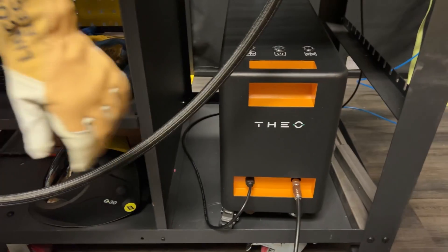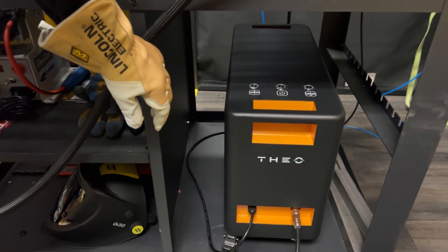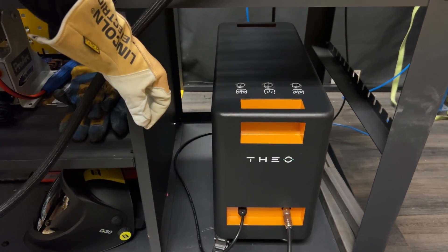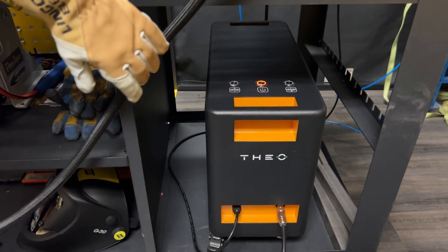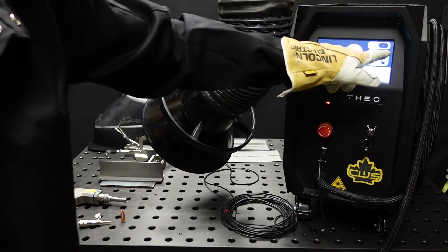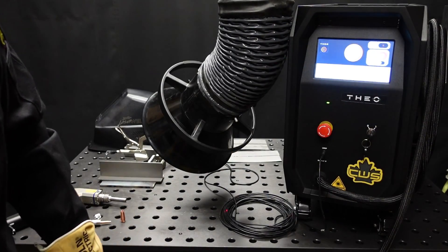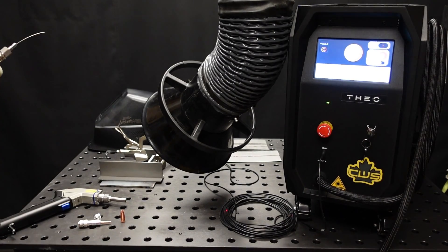Now we're going to do a weld using the wire feeder. This wire feeder is set up with 308L 035 stainless steel MIG wire. Turn it on. It's interconnected to the Thio handheld laser welding machine already. We'll enable the wire feeder and it's ready to use. Now let's set up the gun.